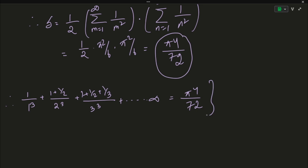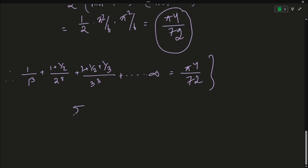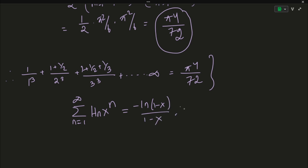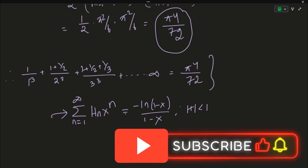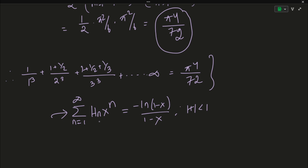There are also integral representations of this result, and an alternate method you could try: write the generating function for harmonic numbers as Σ H_n · xⁿ = −ln(1−x)/(1−x) for |x| < 1. Dividing by x and integrating once gives H_n/n; repeating the process gives H_n/n². This is similar to the technique used in the binomial theorem for different varieties of binomial coefficient sums.